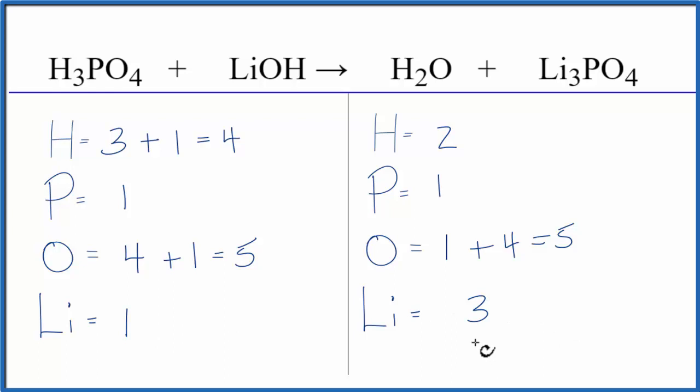Let's balance the lithiums first to see what happens. So we have three lithium here, one here. Let's put a three in front of the lithium hydroxide, so one times three. That'll give us three of those.